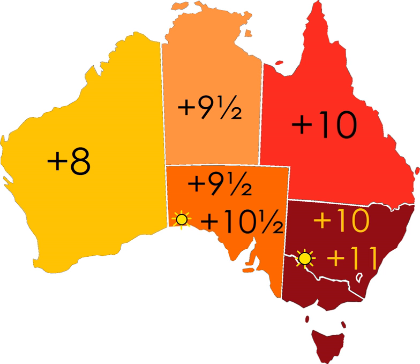The clocks were set ahead of GMT by eight hours in Western Australia, by nine hours in South Australia and the Northern Territory which it governed, and by ten hours in Queensland, New South Wales, Victoria, and Tasmania. The three time zones became known as Western Standard Time, Central Standard Time, and Eastern Standard Time.